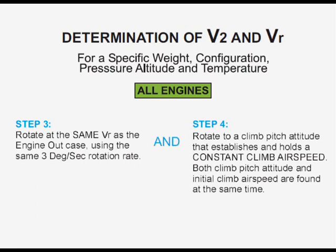The all engines initial climb airspeed and pitch attitude are determined by rotating at VR and 3 degrees per second with all engines operating to a trial pitch attitude and observing the airspeed trend. When the trial attitude produces a constant airspeed climb, both the all engines climb pitch attitude and airspeed have been determined.